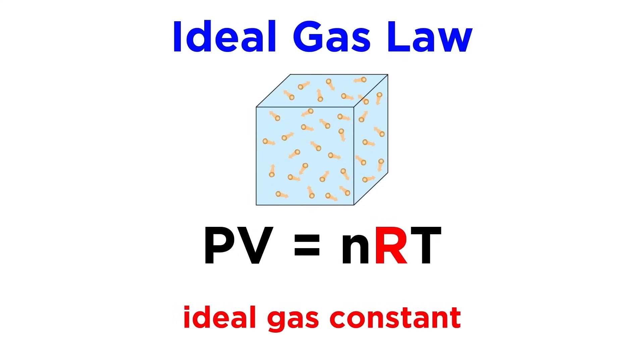R is the ideal gas constant. This gas constant will contain the units necessary to cancel out the respective units on these other variables in order to correlate them all appropriately, and there are several different forms of R that are comprised of the different common units we will often use for these parameters.